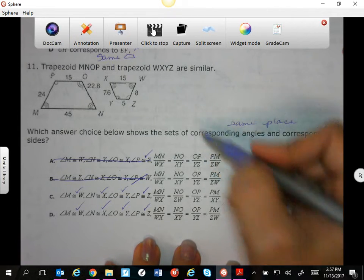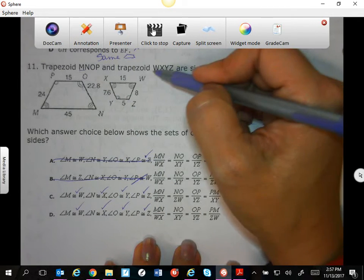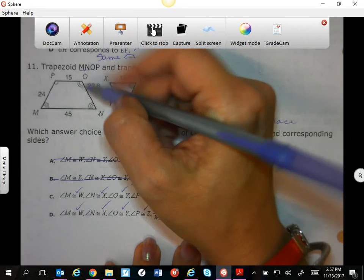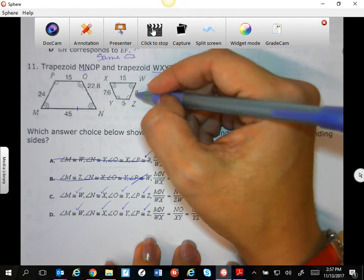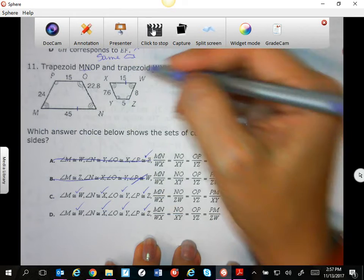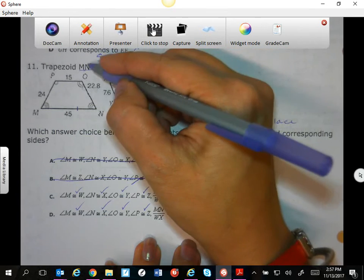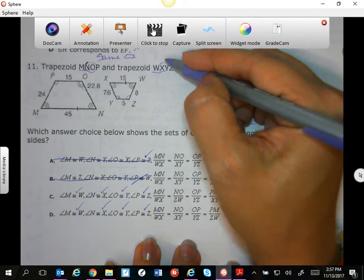So, think about what we talked about before. MN—marking this—is equivalent to WX. Okay. NO and XY.